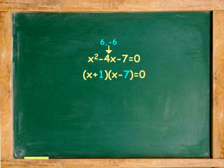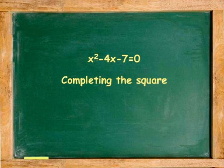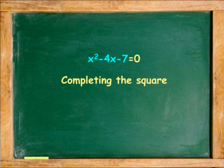Finding which combination is correct would be a very lengthy and difficult task. To solve this quadratic, we turn to a process called completing the square, which involves making a perfect trinomial square out of the left side of the equation.